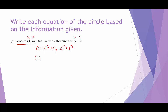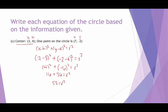Plugging in: 7 minus 3 squared plus negative 2 minus 4 squared equals r squared. 7 minus 3 is 4, so 4 squared is 16. Negative 2 minus 4 is negative 6, and negative 6 squared is 36. So 16 plus 36 gives us 52 equals r squared. The equation of the circle is x minus 3 squared plus y minus 4 squared equals 52.